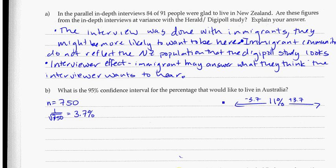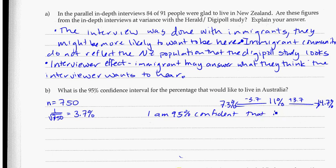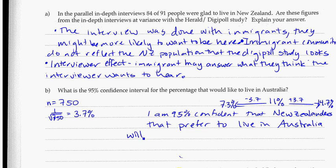And then plus 3.7 to figure out how high it goes. In this case, we get down to 7.3% at the bottom and we go up to 14.7% at the top. So with my confidence interval it gives me my best guess — really the number could possibly be as low as 7.3% or potentially as high as 14.7%. I might want to put this into words: I am 95% confident that New Zealanders who prefer to live in Australia will likely be between 7.3% and 14.7%.